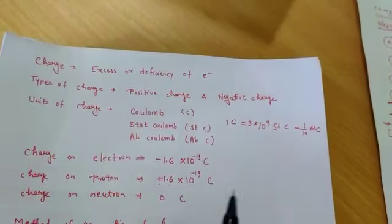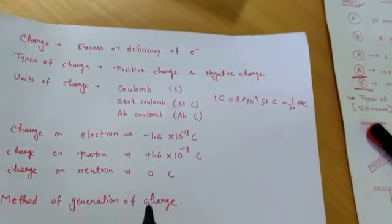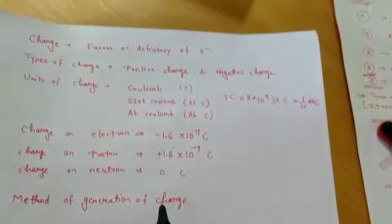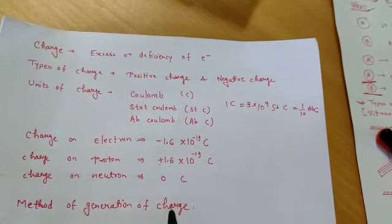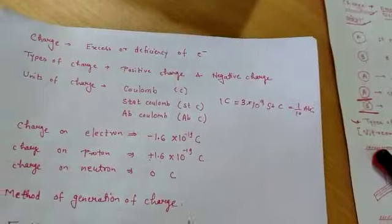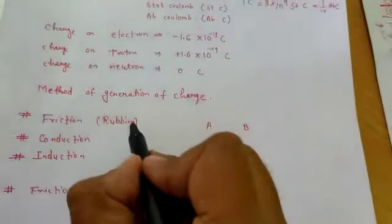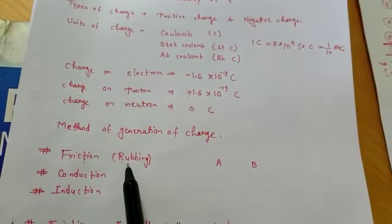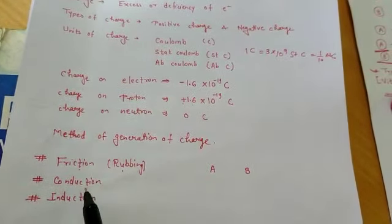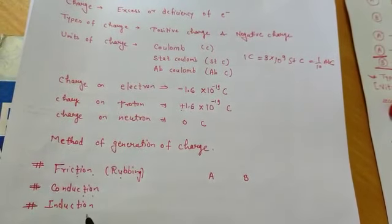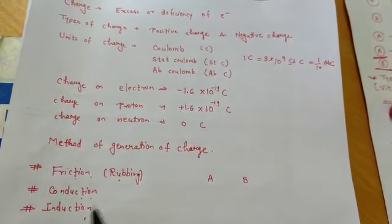Now we will go to the method of generation of charge. There are basically 3 methods: first is friction, another name is rubbing; second is conduction; and third is induction.